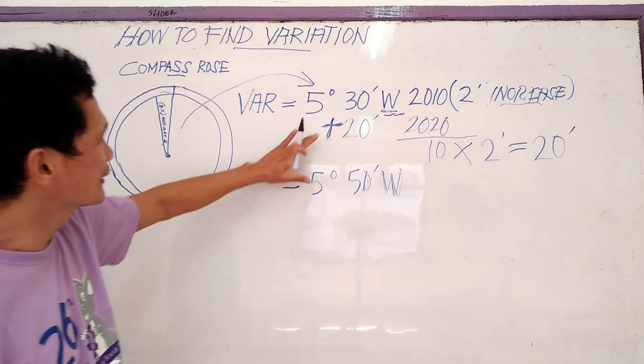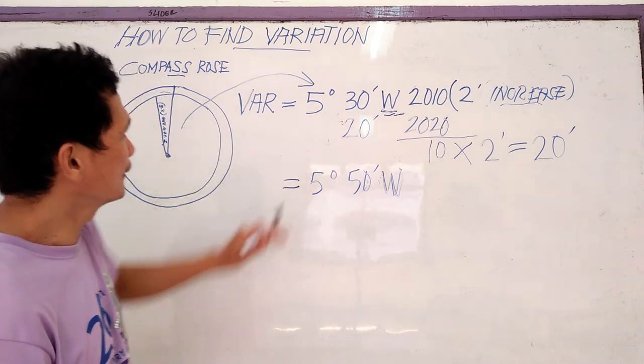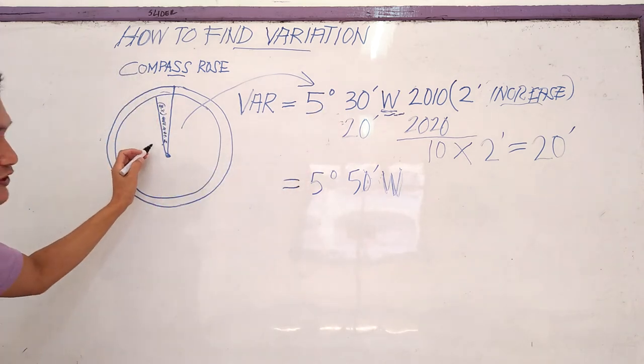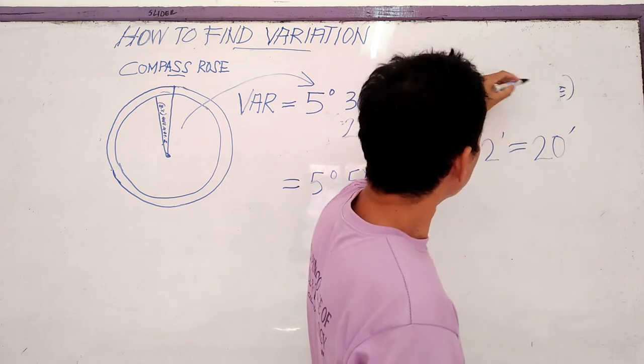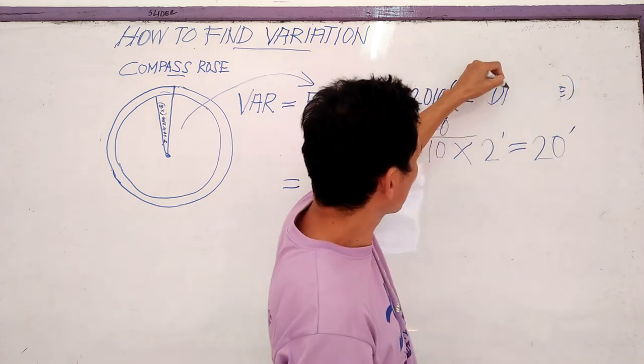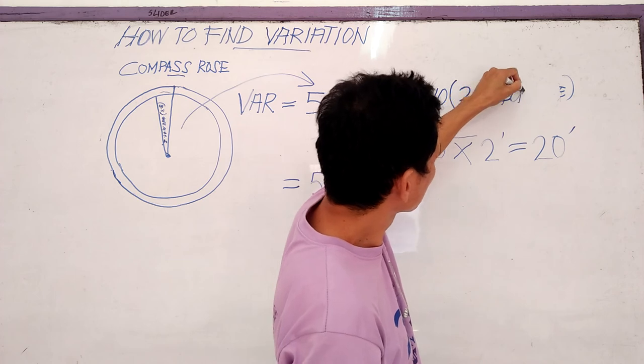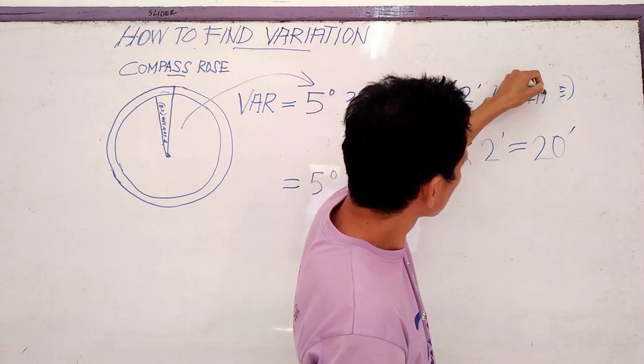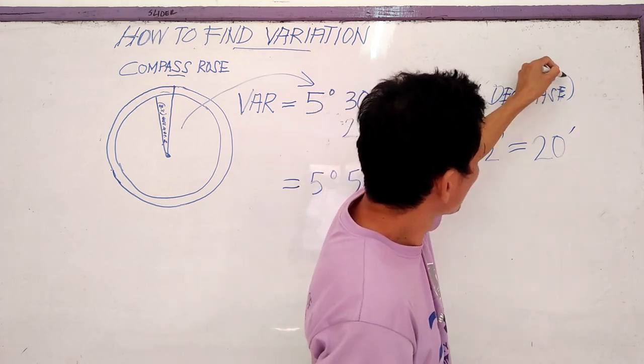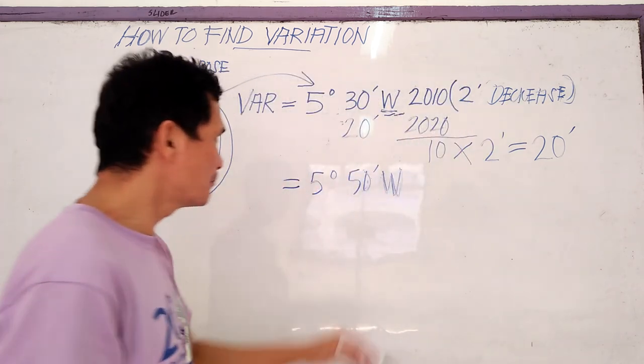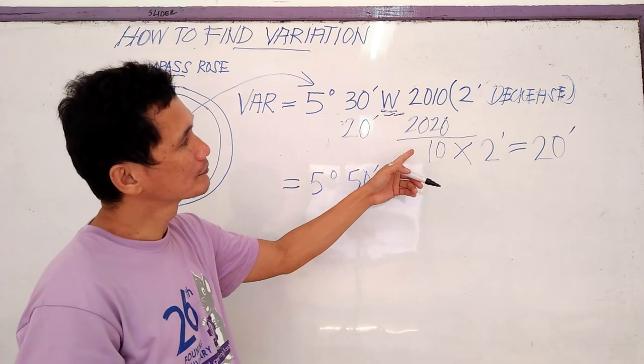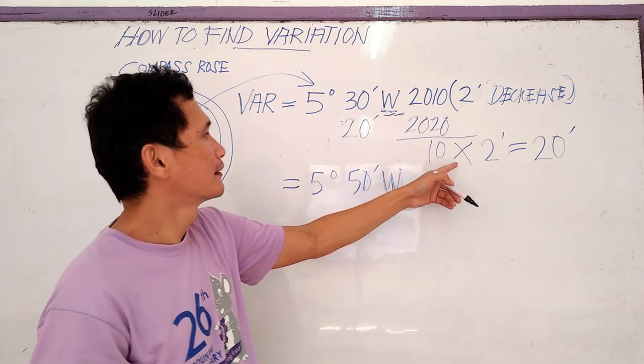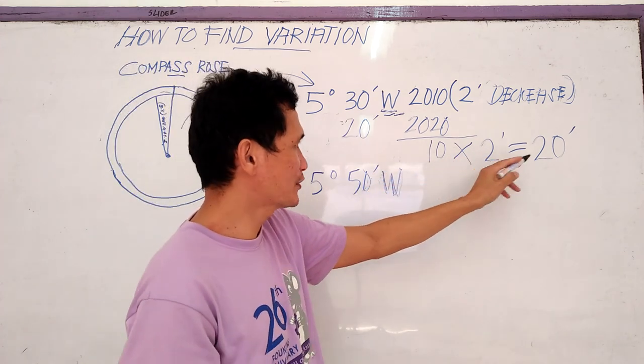Another thing also is that if written in the chart is decrease. Decrease, same procedure. Ten years times two minutes was twenty minutes.